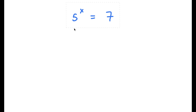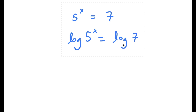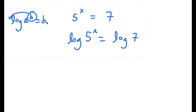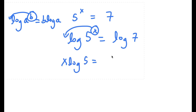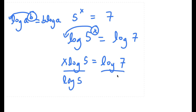In this problem, I have 5 to the power of x is equal to 7. To start off, I'm going to take the log on both sides, so now I have log 5 to the power of x is equal to log 7. If I have something in the form log a to the power of b, I can move the exponent to the front, so this equals b times log a. In this case, log 5 to the power of x becomes x times log 5, which equals log 7. We're solving for x, so I'll divide both sides by log 5.